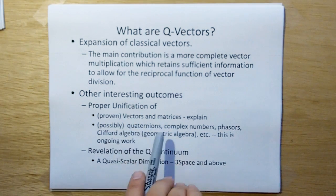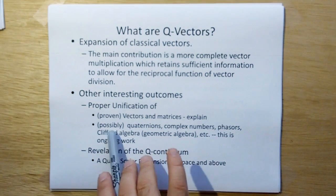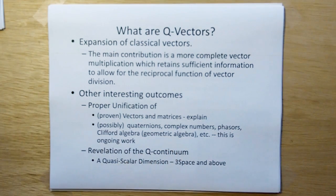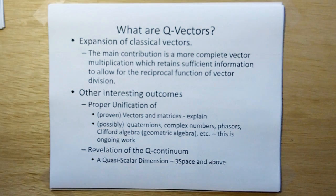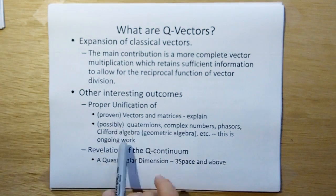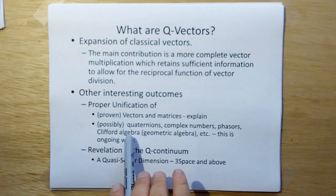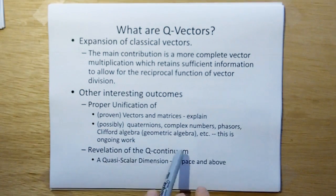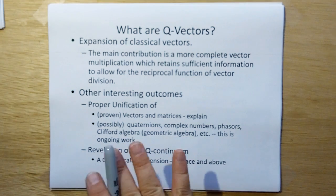By unifying that way, I believe, and I didn't get a chance to go through all this because I needed to get this stuff out for ethereal mechanics, so I cut back on how far I was going with it. But right now I presently believe, and this work is not done yet, that this same technique unifies quaternions, complex numbers, phasors, Clifford algebra, etc. This is ongoing work.